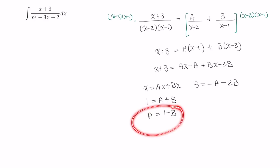Now I can substitute this. So everywhere I see an a, I'm going to substitute it. So that will be replaced with a 1 minus b. So I am left with 3 equals negative 1 minus b minus 2b.